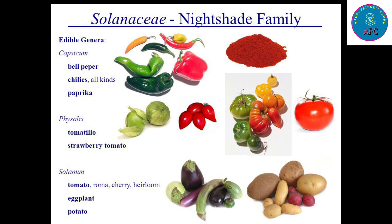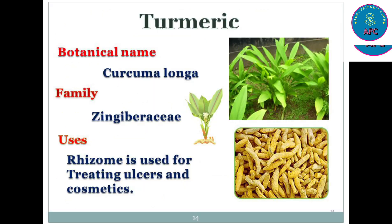The Solanaceae family is also called the nightshade family. Various crops under the Solanaceae or nightshade family are bell pepper, chilis, paprika, tomato, strawberry tomato, brinjal, and potato.